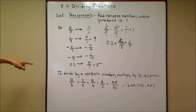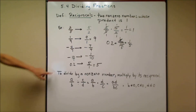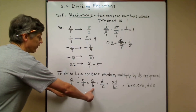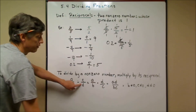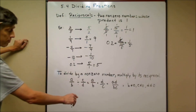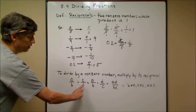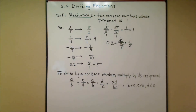The key step for dividing fractions: to divide by a non-zero number, you multiply by its reciprocal. Leave the first fraction the same, then multiply by the reciprocal of the divisor — the second fraction. Don't flip them both; only invert the second one. Then multiply the numerators and multiply the denominators, just like in the last lesson.